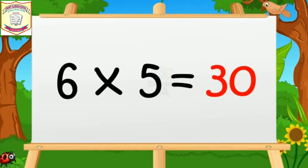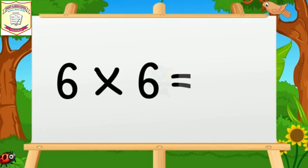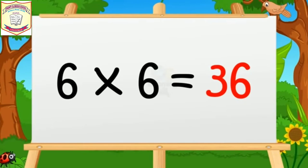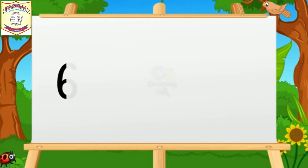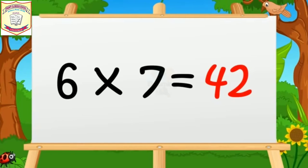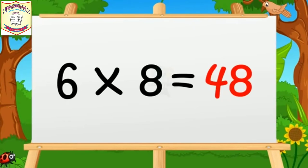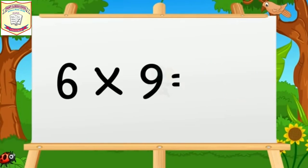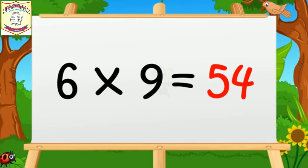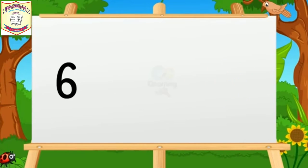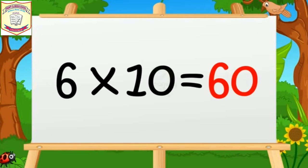Six fours are twenty-four. Six fives are thirty. Six sixes are thirty-six. Six sevens are forty-two. Six eights are forty-eight. Six nines are fifty-four.